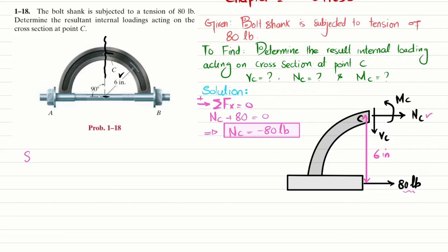Our answer is negative, meaning our assumed direction is wrong and Nc should be towards the left hand side. The magnitude of Nc is 80 pounds.